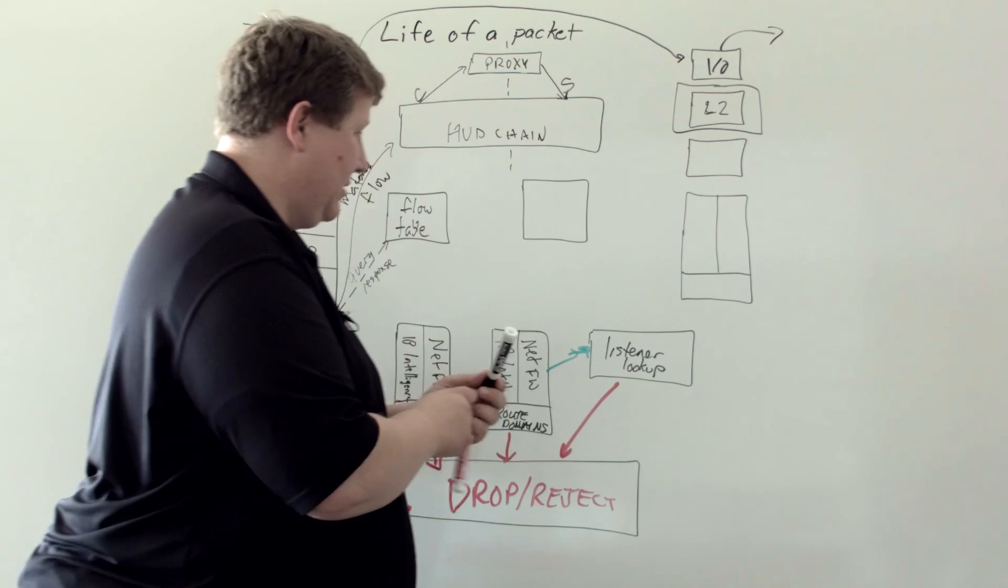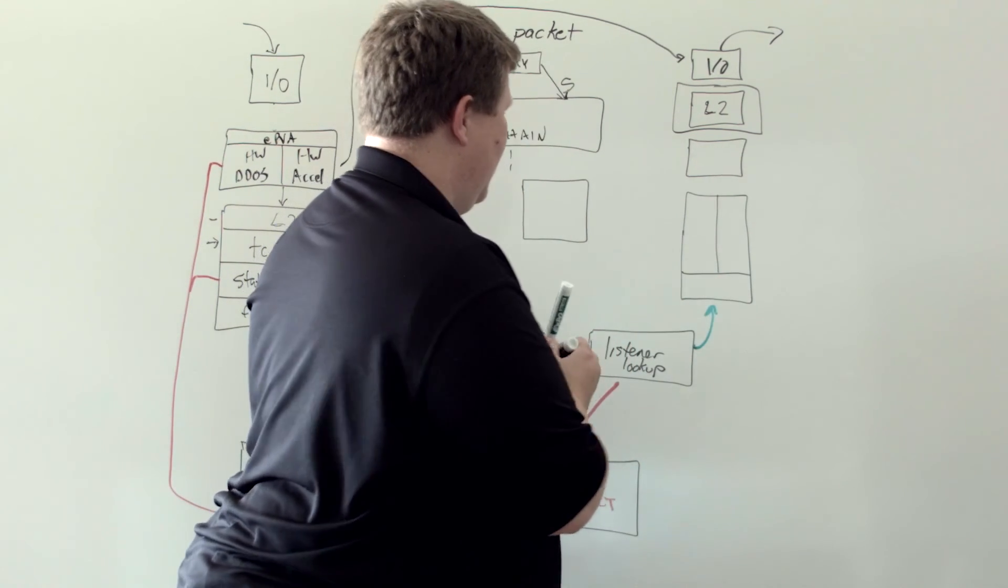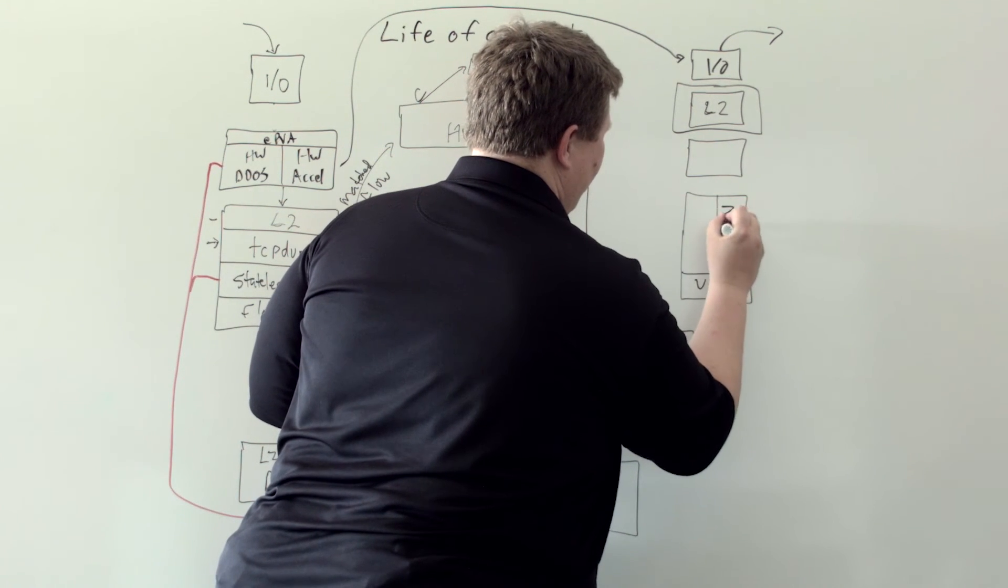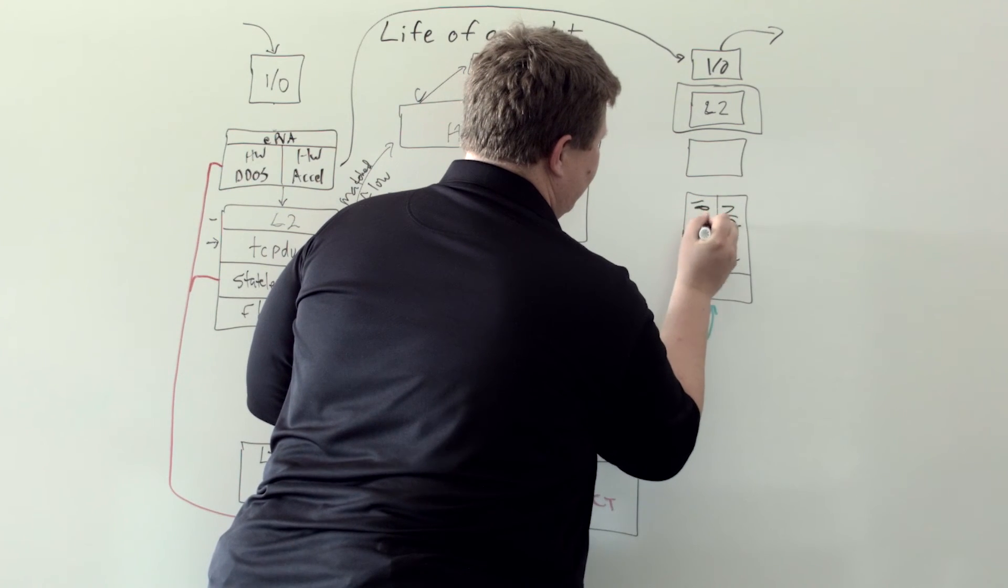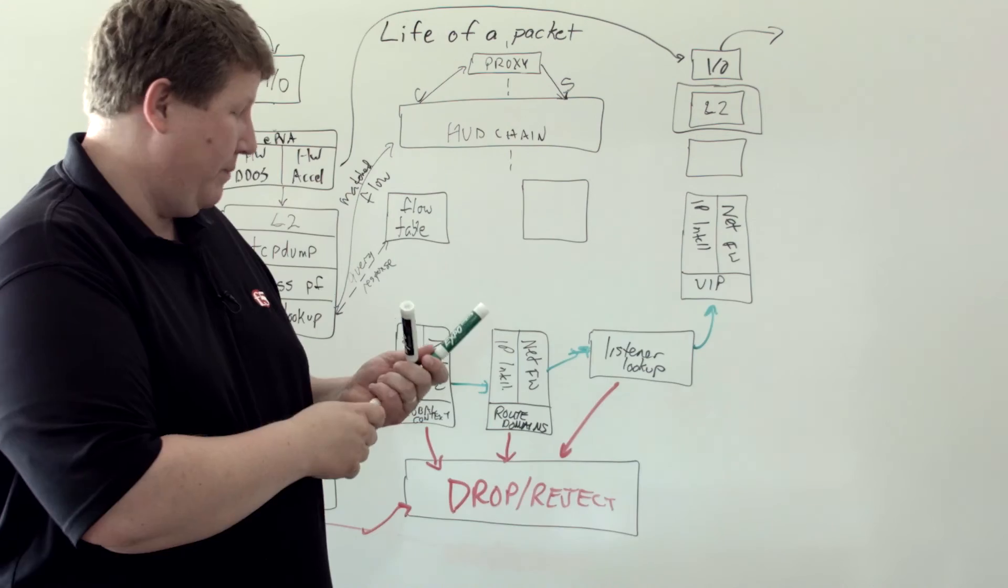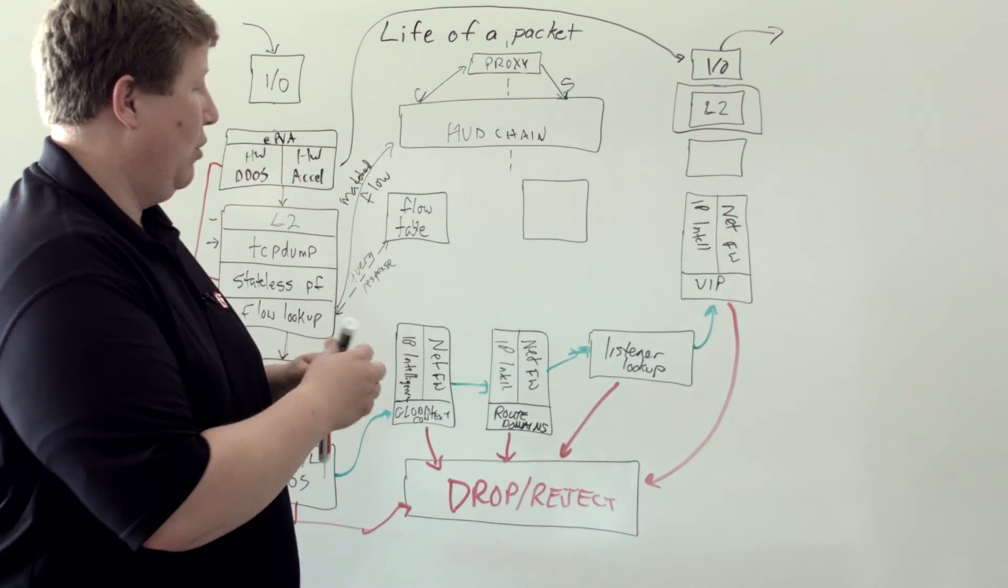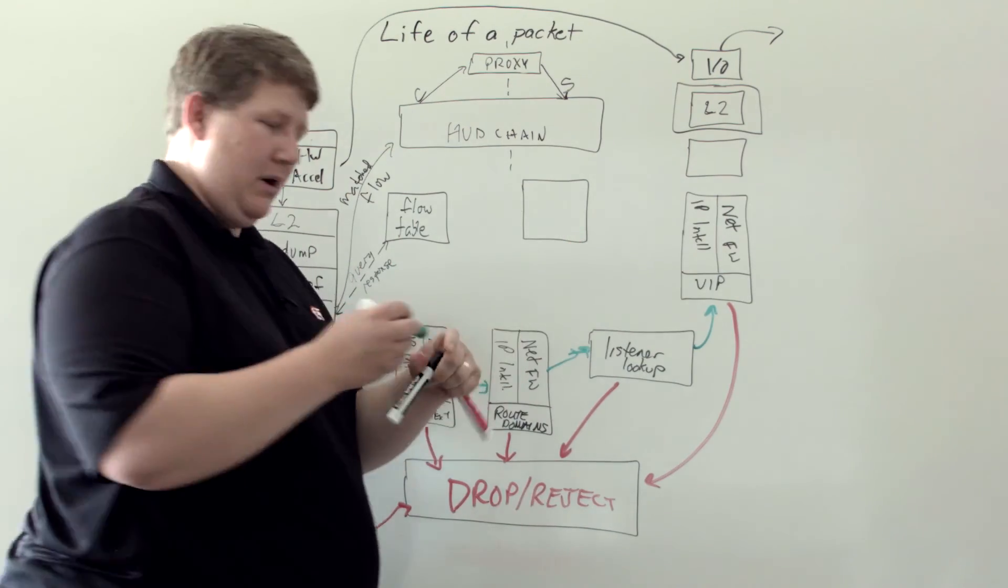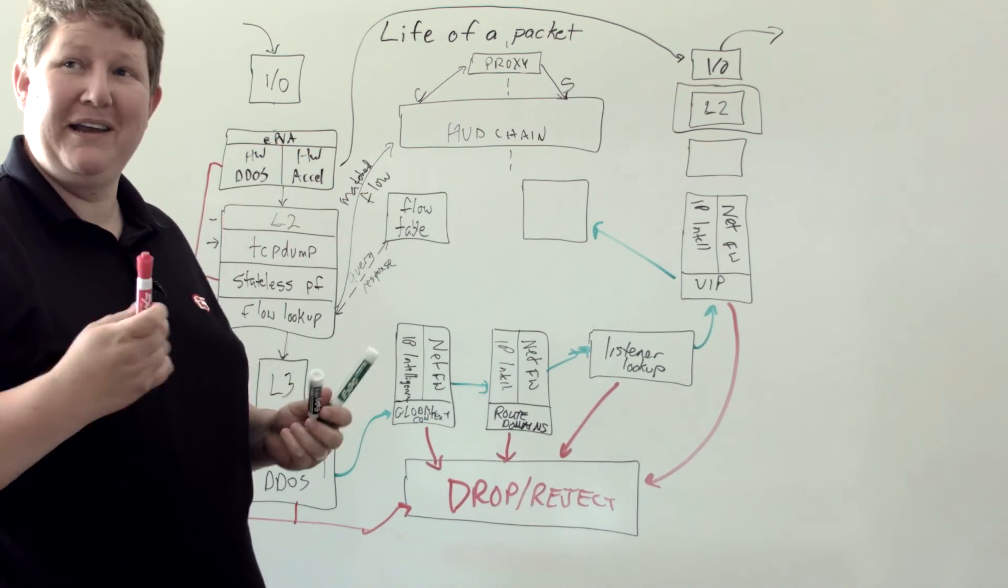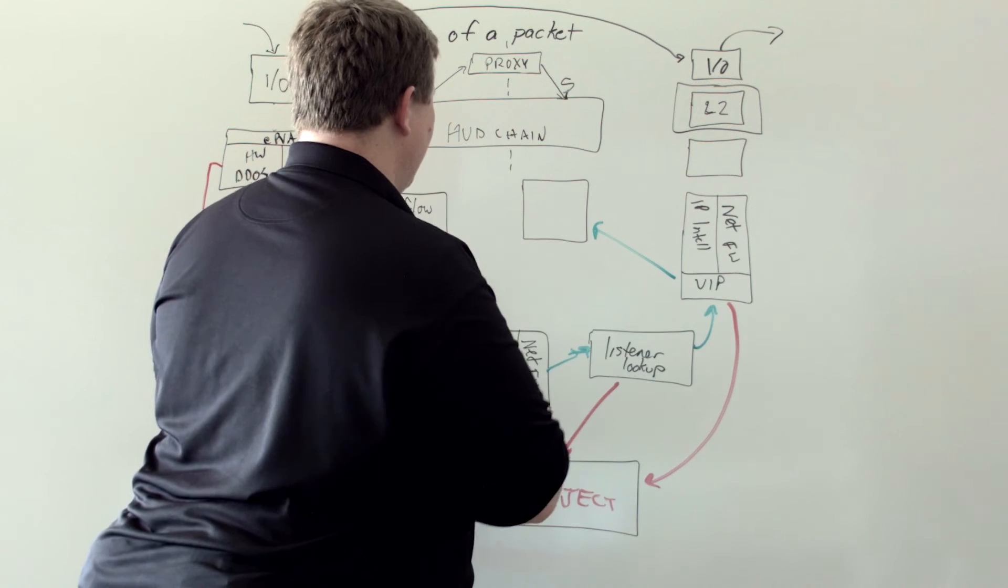If there is a listener, then we're going to come up to the virtual server. Here we have the VIP. Again, we can have some network firewall or IP intelligence rules at the VIP level. Based upon what happens there, we're going to drop or reject that traffic. Or we get through this point, boom, all right. Now we're going to create a flow. We finally got to where we're going to get into the flow table.